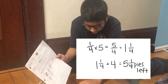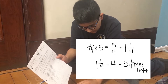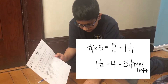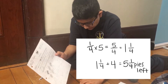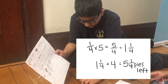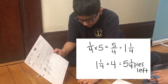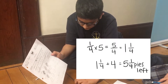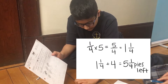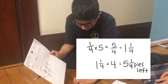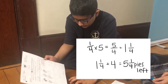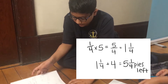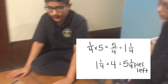So I added four because there were four pies left. Added that to one and one-fourths, and that got me to five and one-fourths pies. So she has five and one-fourths pies left.